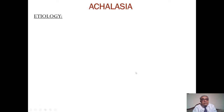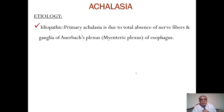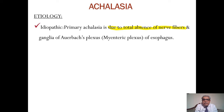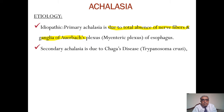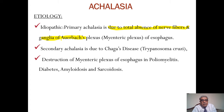Etiology of achalasia: primary or idiopathic achalasia is due to total absence of nerve fibers and ganglia of Auerbach's plexus, that is the myenteric plexus of the esophagus. Secondary achalasia is due to Chagas disease — Trypanosoma cruzi — which causes destruction of the myenteric plexus of the esophagus. It is also seen in poliomyelitis, diabetes mellitus, amyloidosis, and sarcoidosis.